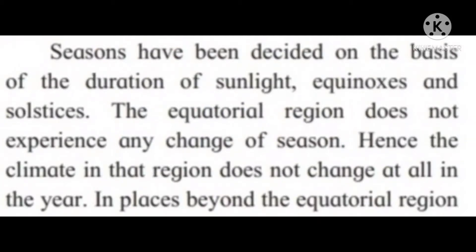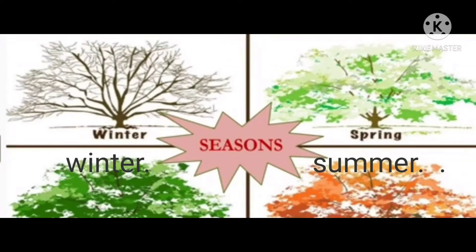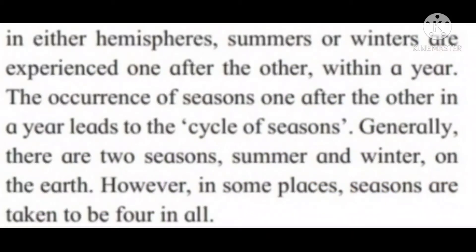Note that on the equator, the duration of day and night is the same throughout the year — that is, 12 hours each. Seasons have been decided on the basis of the duration of sunlight. The equatorial region does not experience any change of season, hence the climate in that region does not change at all during the year. In places beyond the equatorial region in either hemisphere, summers or winters are experienced one after the other within a year.